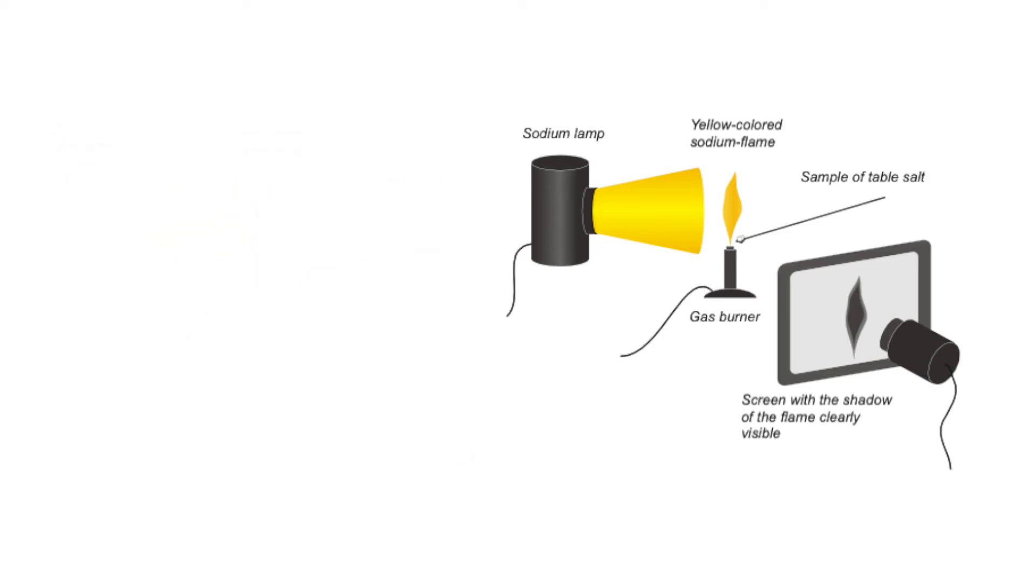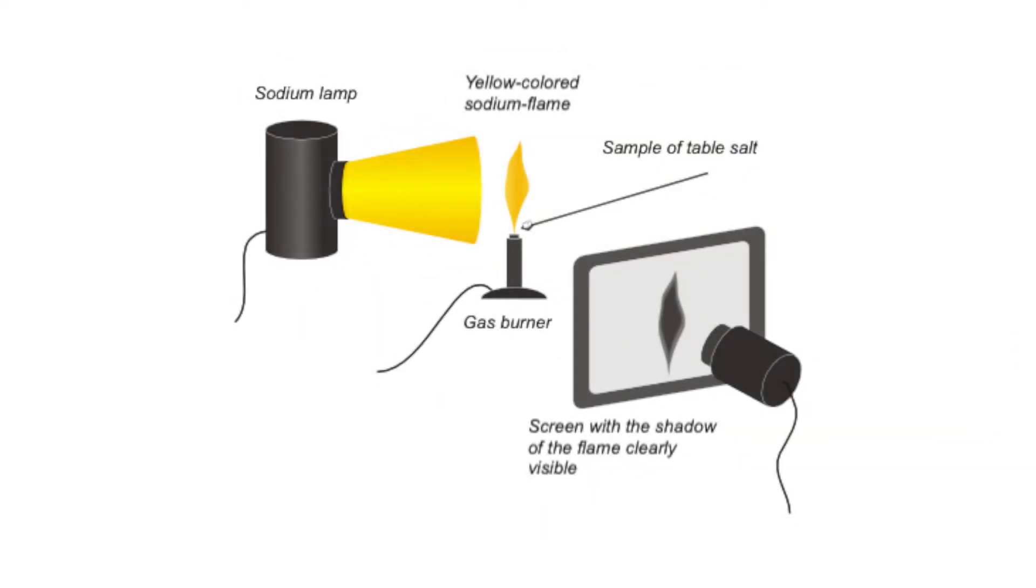This is called resonance fluorescence. Consequently, the sodium atoms in the flame intercept the photons directed towards the screen and emit them in any direction in space during a later emission. As a result, the flame is visible as a shadow on the screen.